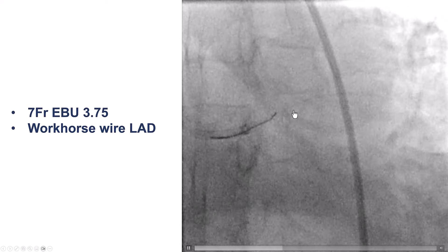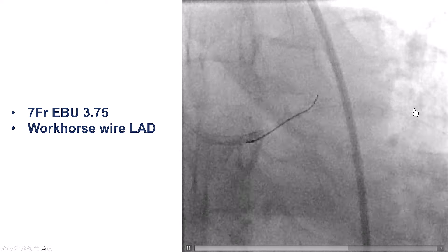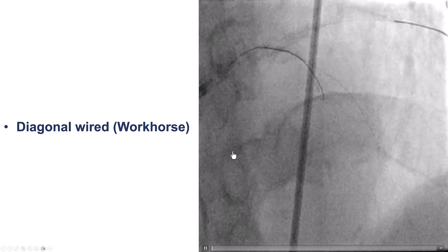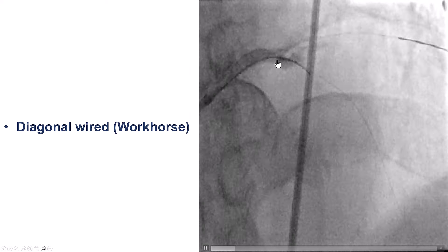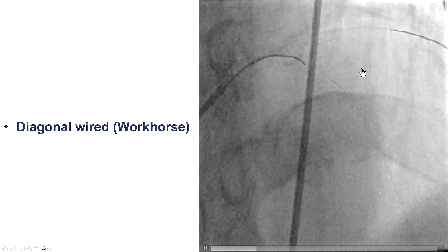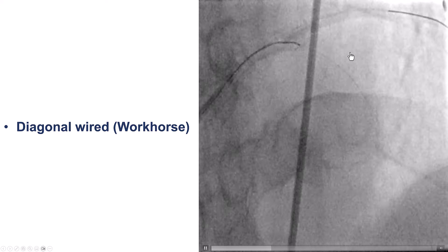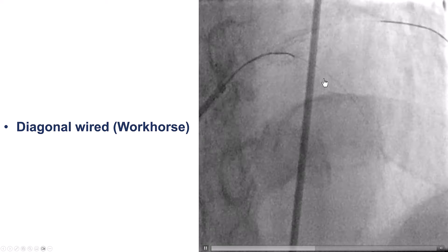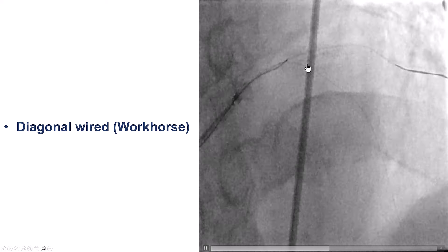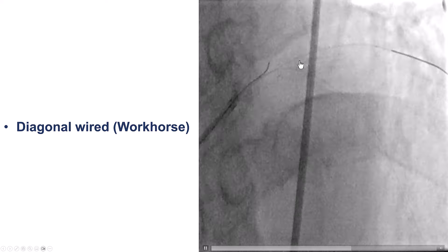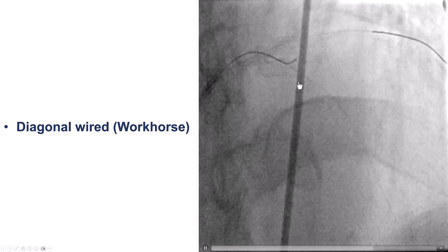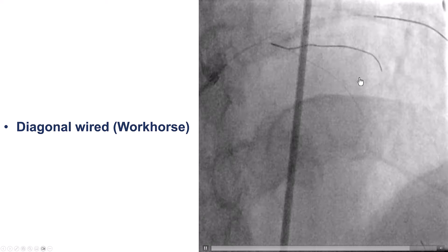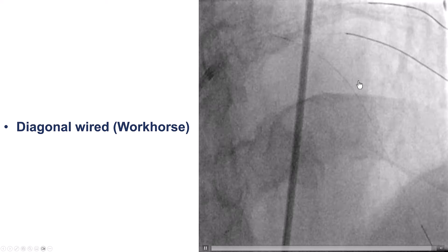We used a guide extension. We first advanced easily a workhorse wire into the first diagonal, and then advanced another guidewire into the LAD, and another workhorse guidewire into the diagonal branch. The first step in every bifurcation — and for this bifurcation we mean the LAD-diagonal — if the branch is significant, which this clearly is given its size, and if there's a possibility of losing it, which is possible given the ACS presentation and the large plaque burden, having a guidewire there is important to prevent closure and act as a marker of where the side branch is.